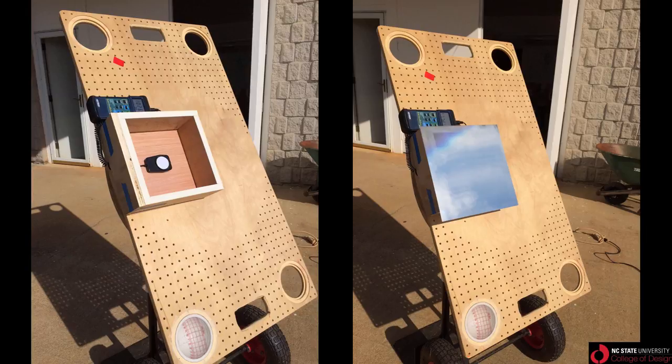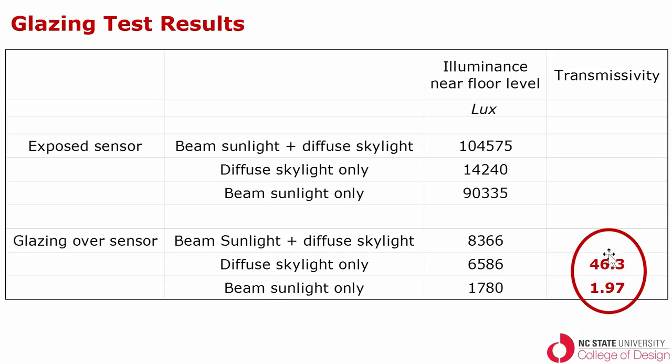The luminance measurements were recorded with and without the glazing, and with and without a shading element positioned several feet above the box, which we used to represent the effect of a cloud blocking the sun from reaching the apparatus. With no shading element, the measurements gave the illuminance under the combination of beam sunlight plus diffuse skylight. With the shading elements, the measurements gave the illuminance under just diffuse skylight. So here are the results. Here we have the exposed sensor and three values. Here is the illuminance under beam sunlight plus diffuse skylight and then breaking it down by diffuse skylight and beam sunlight. So this is what we were measuring on the sensor. The illuminance near the floor level with no glazing over it. So this is the exposed sensor. This is with the glazing. And these are the same measurements again, just repeated.